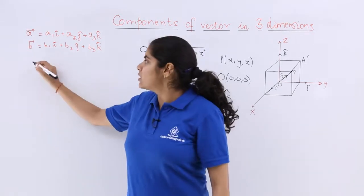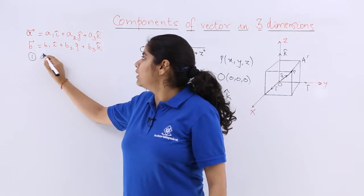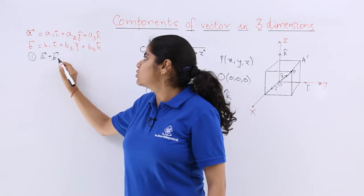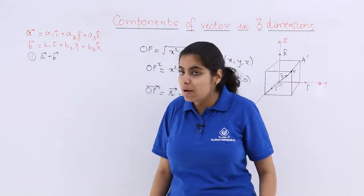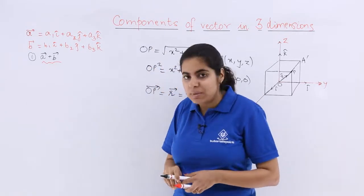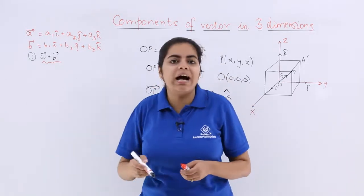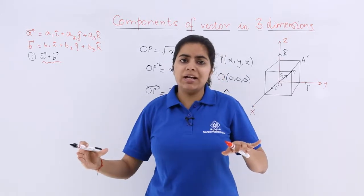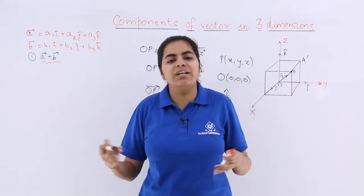Let's see the first operation. What is the resultant when I am supposed to add these two vectors? If you have to add these two vectors, you have to add first the i cap components, that means the x components, then the y components, and then the z components.